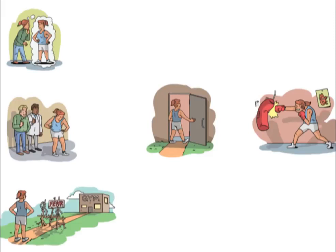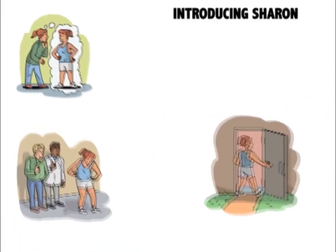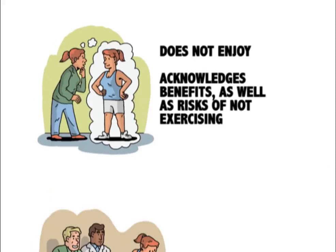Let's bring in the example of Sharon. Sharon does not enjoy exercise, which reflects her affective attitude, but she knows that there are benefits for her health. She has also acknowledged the risks associated with not engaging in exercise, such as the likelihood of having a heart attack. This reflects an ambivalence regarding her instrumental attitude, and these attitudes are unlikely to promote strong intentions.